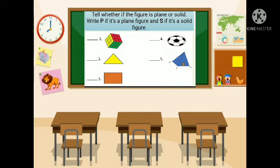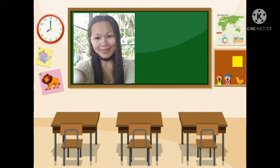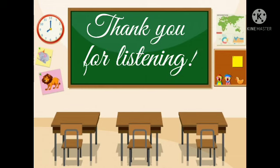Write your answer in the blank before each number. Okay, are you done? Very good. Now let's come to the last activity of this module. We're going to list down the names of 2D or plain figures and the 3D shapes or solid figures and write them under the correct column. That would be all for today. I hope you learned something in this lesson. Thank you for listening. Goodbye, kids!